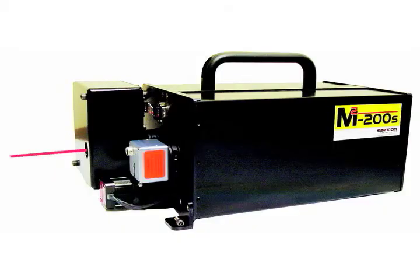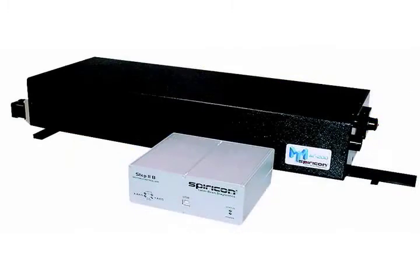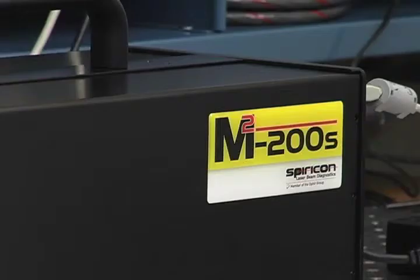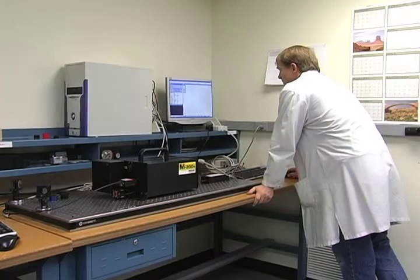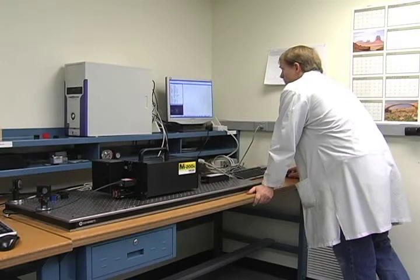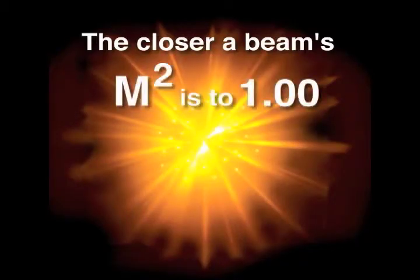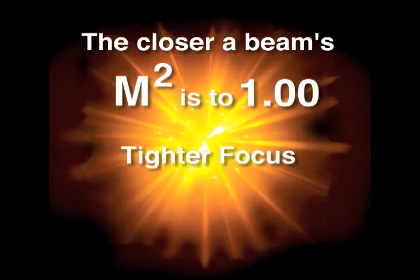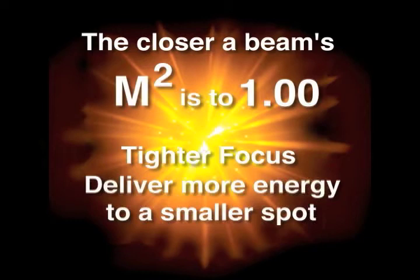Ophir Spiricon's m squared 200 beam propagation analyzers are most often used to make this difficult measurement. The closer a beam's m squared is to 1.0, the more tightly the beam can be focused, delivering more energy in a smaller spot.